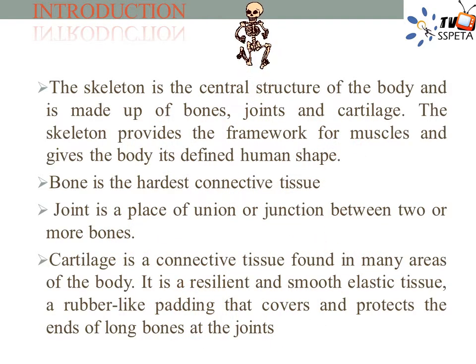The skeleton is the central structure of the body and is made up of bones, joints and cartilage. It provides the framework for muscles and gives the body its defined human shape. Bone is the hardest connective tissue. A joint is a place of union or junction between two or more bones. Cartilage is a connective tissue — resilient and smooth elastic tissue — a rubber-like padding that covers and protects the ends of long bones at the joints.